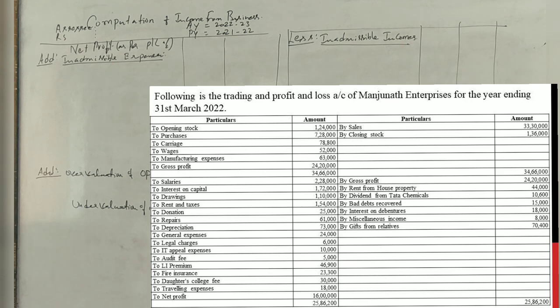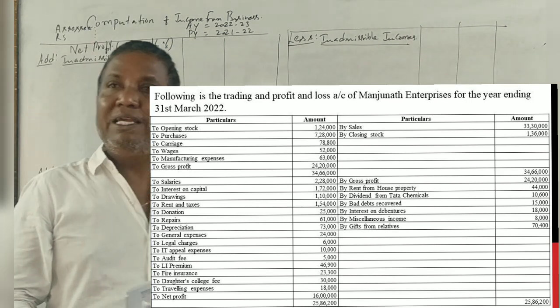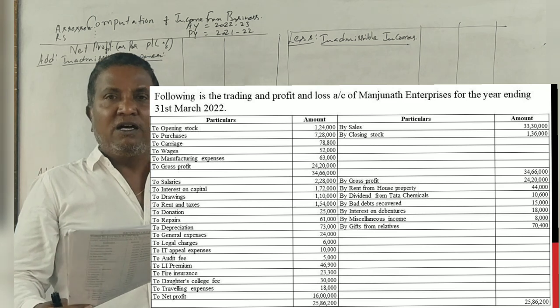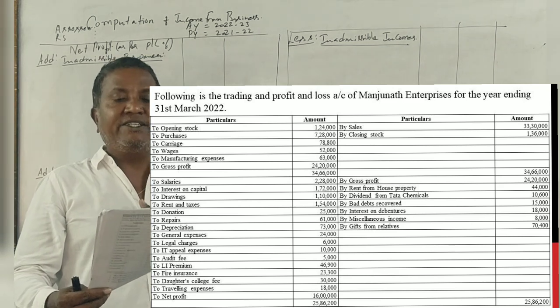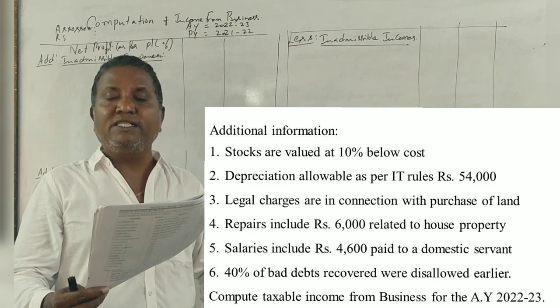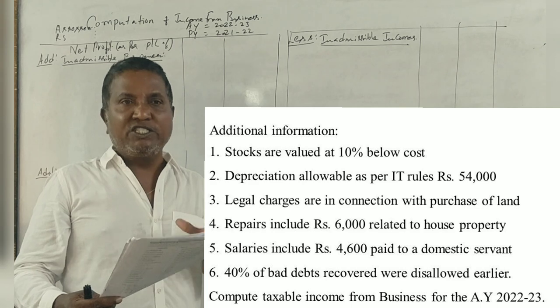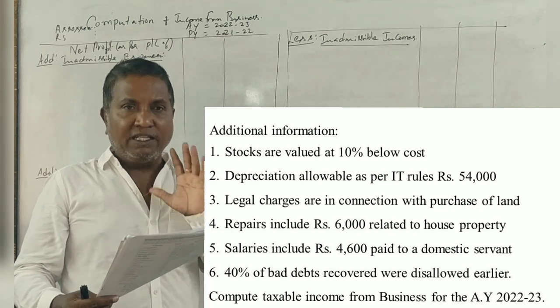Our students in income tax, BBA students, 2015, only one question there. The following is the trading and profit and loss account of Mr. Manjunath Enterprises for the year ending March 2022. First, I am going to discuss adjustments.